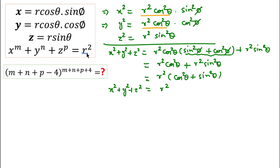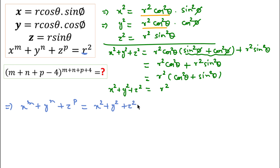So x square plus y square plus z square equals r square. Now if we put this value of r square here, we can write x to the power m plus y to the power n plus z to the power p equal to x square plus y square plus z square. Equating the powers of x, y, z we get m equal to n equal to p equal to 2.